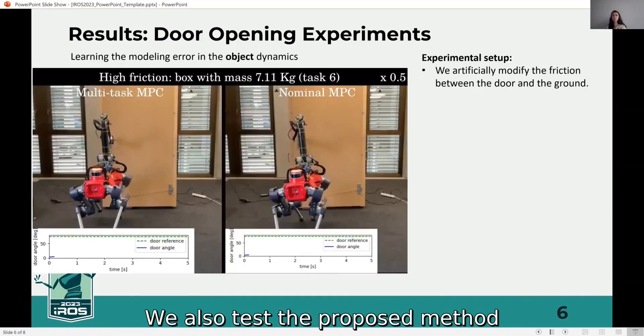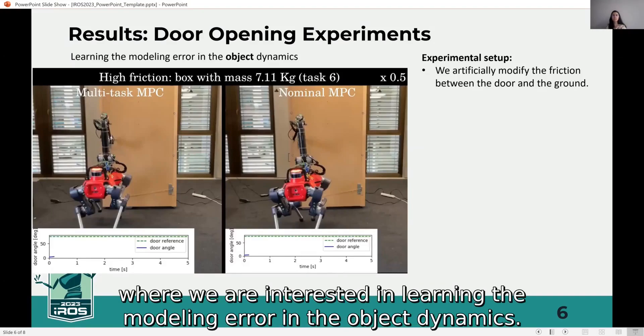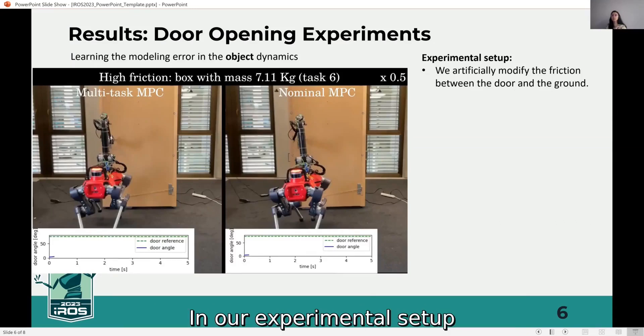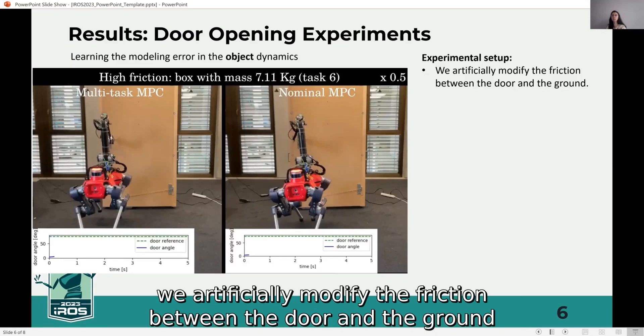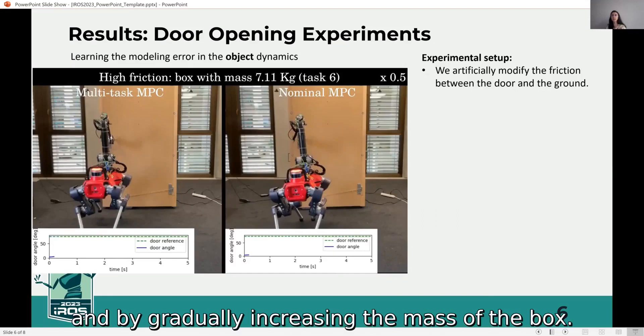We also test the proposed method in robot experiments with a quadrupedal manipulator, where we are interested in learning the modeling error in the object dynamics. In our experimental setup, we artificially modify the friction between the door and the ground by adding a box to the back of the door and by gradually increasing the mass of the box.